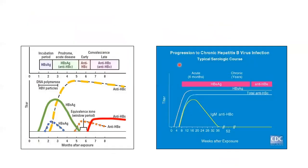In acute disease, as the surface antigen increases, the body mounts a response. EAG also increases, indicating infectivity. The immune system starts producing antibodies against the core antigen, checking viral proliferation and causing gradual reduction in HBsAg levels. There is a gap before the anti-HBs antibody appears — this is the window period. During the window period, the only way to detect infection is by measuring antibody against core antigen. Once anti-HBs appears, the patient is completely protected.